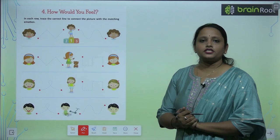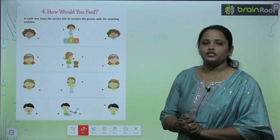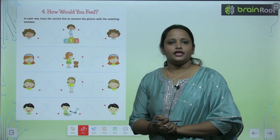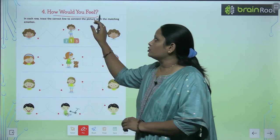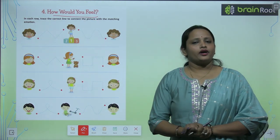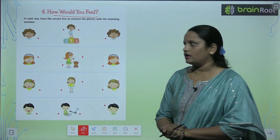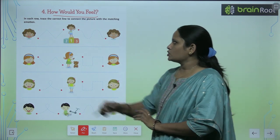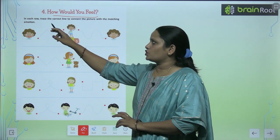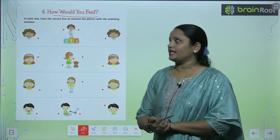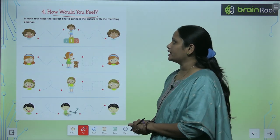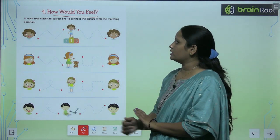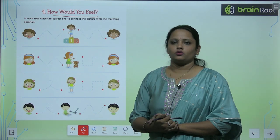So children, let's start with chapter number 4 and the name of the chapter is 'How would you feel?' — Aapko kaisa lagega? So it's asking you something. In each row, trace the correct line to connect the picture with the matching emotion.